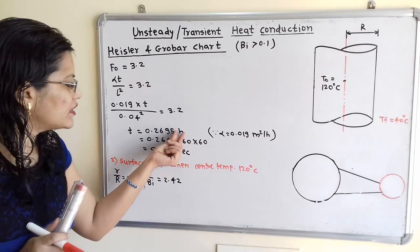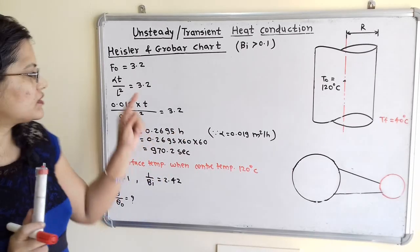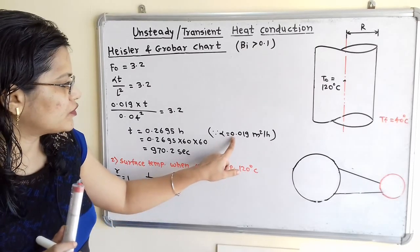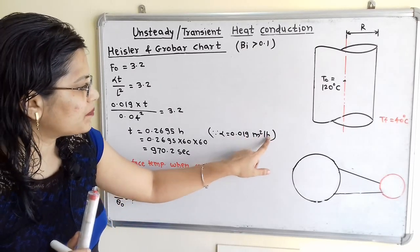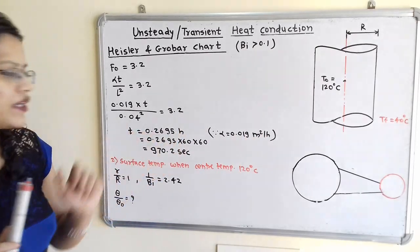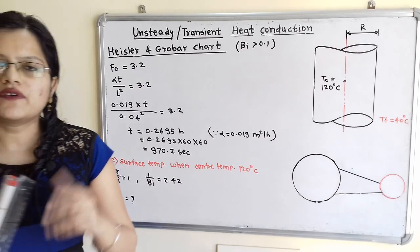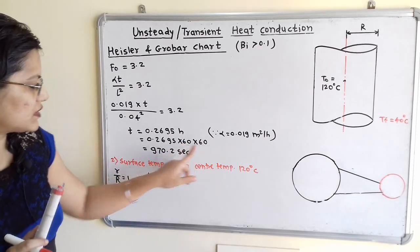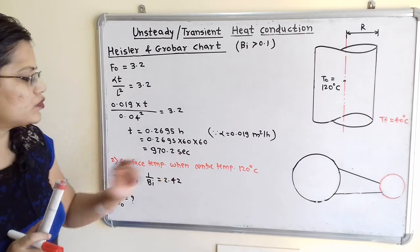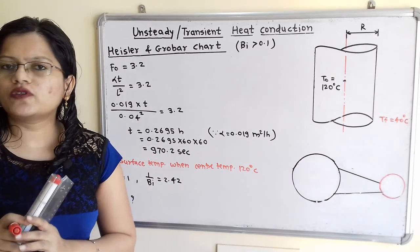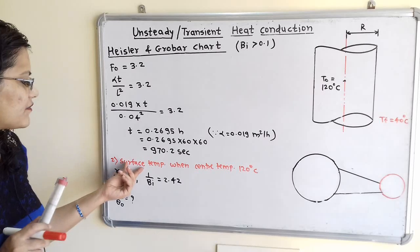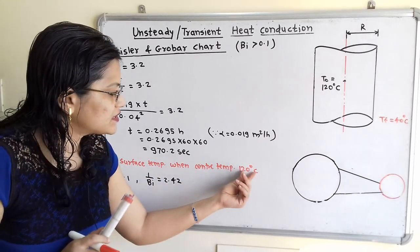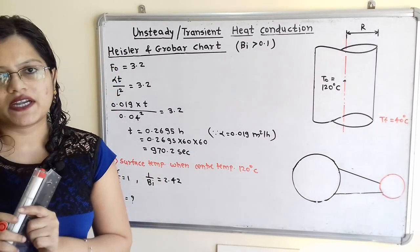The unit is hours because alpha is given in m²/hour (0.019 m²/hour). Converting to seconds: t = 0.2695 × 60 × 60 = 970.2 seconds. Now we move to the second question: finding the surface temperature when the center temperature is 120°C.